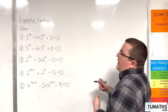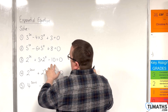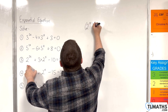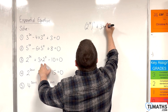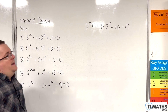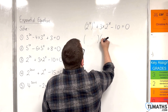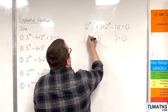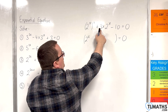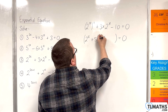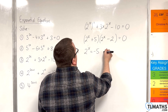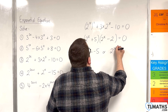Number 3: 2 to the 2x plus 3 lots of 2 to the x take away 10 equals 0. First, write 2 to the 2x as 2 to the x, all squared. Then we have 3 lots of 2 to the x take away 10 equals 0. We need two numbers that multiply to make minus 10 but add to make 3 — that would be plus 5 and minus 2. So for one bracket to be 0, 2 to the x would have to be negative 5, and for the other bracket, 2 to the x would have to equal 2.